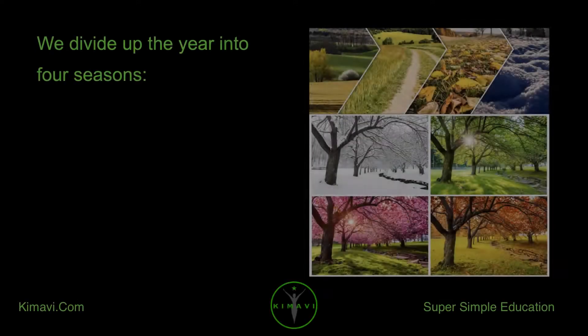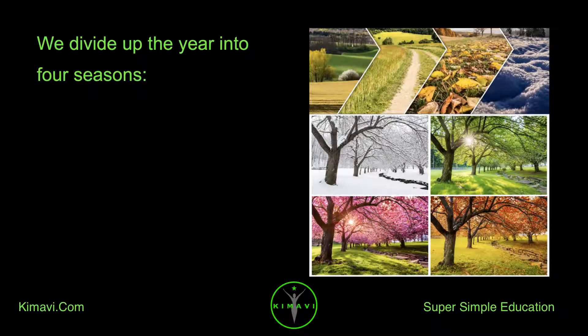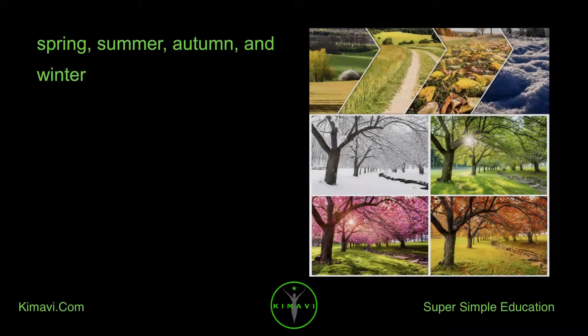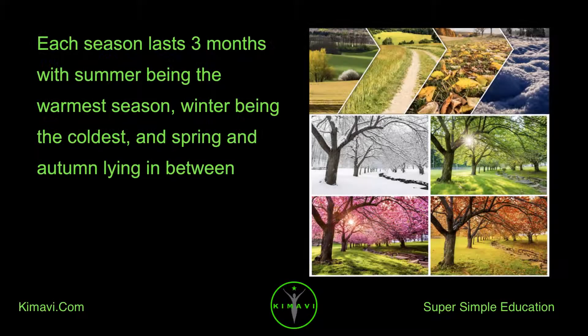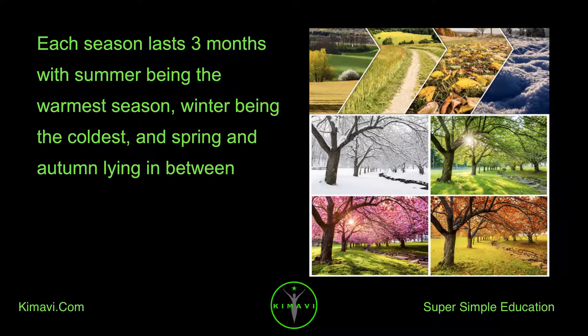We divide up the year into four seasons: spring, summer, autumn, and winter. Each season lasts three months with summer being the warmest season, winter being the coldest, and spring and autumn lying in between.